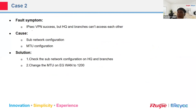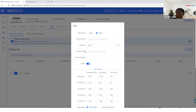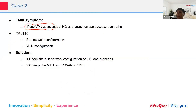The second troubleshooting case: VPN tunnel is established successfully, but HQ and branch cannot access each other. The problem may be the subnet mask — the local subnet and peer subnet mask may be incorrect. Even if the tunnel is up, the wrong subnet mask prevents HQ and branch from connecting. The second cause may be related to MTU.